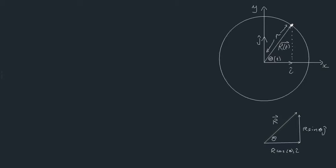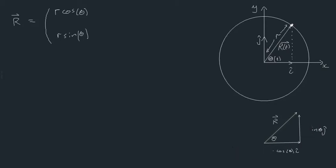So the displacement vector R can be rewritten as r cosine theta times i plus r sine theta times j — where r is the scalar magnitude, cosine theta and sine theta give the distances, and i and j denote the direction.